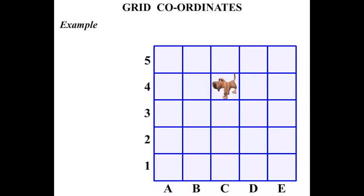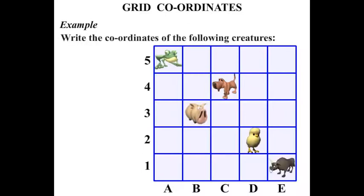We have a dog there. And a frog. A pig. A bull. And a chick. And we're asked to write the coordinates of the following creatures.